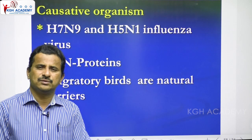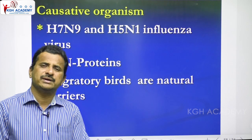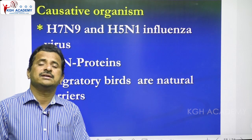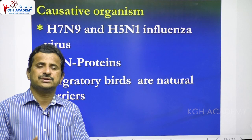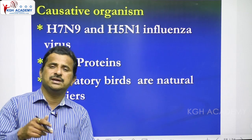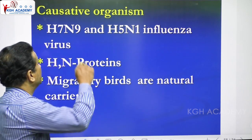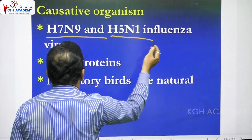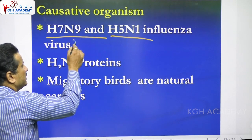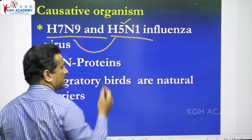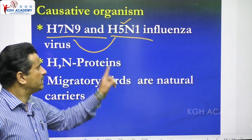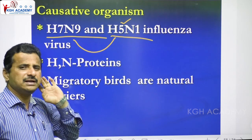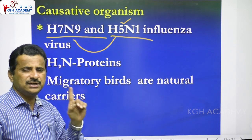Bird flu, swine flu, and normal flu are all caused by influenza viruses, but different strains cause different types of flu. Bird flu is caused by the H7N9 influenza virus or the H5N1 influenza virus. H5N1 is the most common — most bird flu cases are because of the H5N1 influenza virus. At minimum, you should write one causative agent: influenza virus, particularly H5N1 influenza virus.